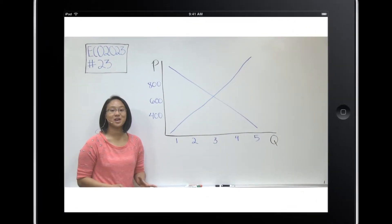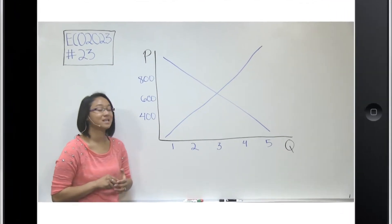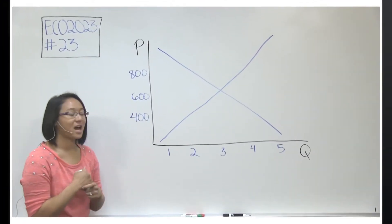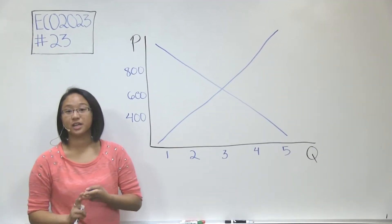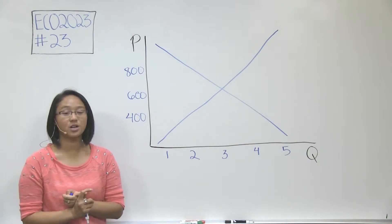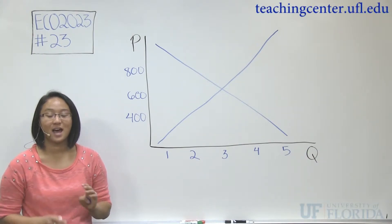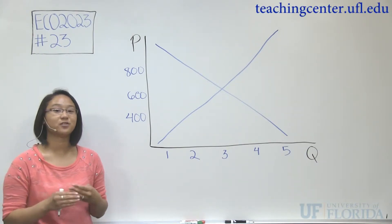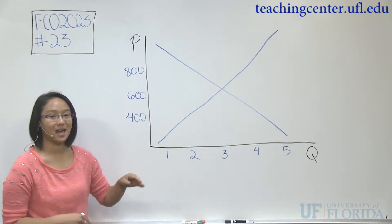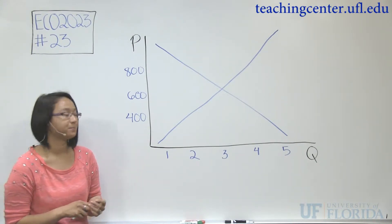We're going to do a price floor and price ceiling question. This question asks for two things. First, it sets the price at $400, and then it sets the price at $800. You'll see that there are different changes with the price ceiling set above and below equilibrium.